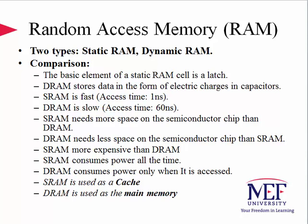SRAM is used as a cache — we will cover caches later — and DRAM is used as main memory. The cache is a memory architecture close to the CPU and is faster, while main memory is a bit further away from the CPU and is slower.